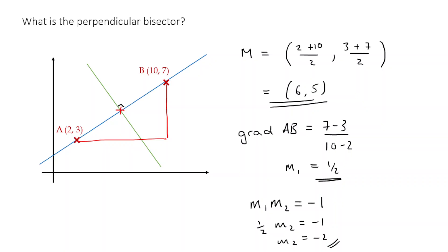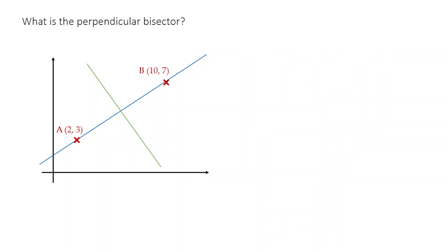So we now know to clarify the gradient of the green line, and we know a point that it goes through, 6, 5. Well, if we know that, then we should be able to get our answer. So let's just clarify again. The gradient that we're looking for is minus 2, and the point that it goes through, the midpoint, is 6, 5. So now we can just use our formula, Y minus Y1 is equal to M, X minus X1.